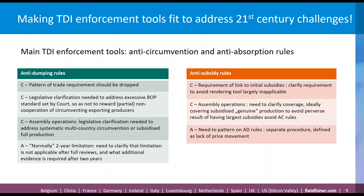Another area where there is room for improvement is enforcement measures. When measures are in place — when you have succeeded in getting dumping or subsidy duties — you want to make sure they apply effectively. There are two specific tools available: anti-circumvention and anti-absorption. Anti-absorption, as the name says, implies that the duties are undermined by the exporter swallowing part or all of the duty, usually in the form of reduction of export prices.